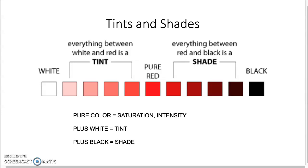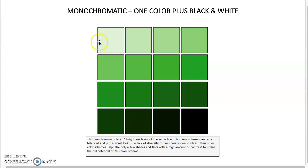A clarification on the project sheet: you only have to do the color scale for one color. I recommend choosing one of the primary colors straight from the tube — red, yellow, or blue — and pick the one you'll use most in your design, as it will be most helpful. You do not have to do this for all three primary colors, just one.